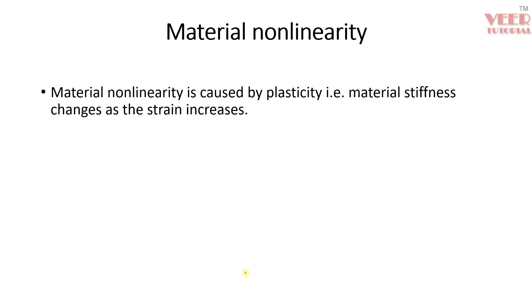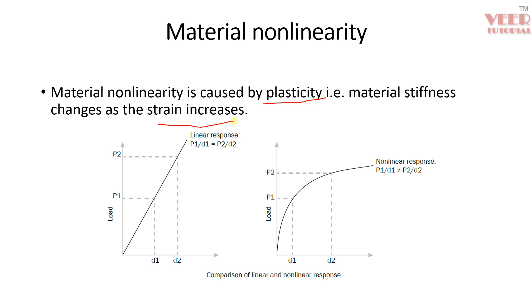Material nonlinearity is caused by plasticity — when you apply a load, the body does not regain its original position. The material stiffness changes as strain increases. In a load versus displacement curve, linear behavior shows a straight line, while nonlinear behavior produces a curve. This general convergence curve describes the nonlinear relationship between load and displacement.